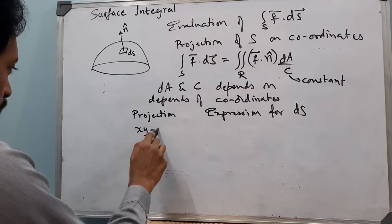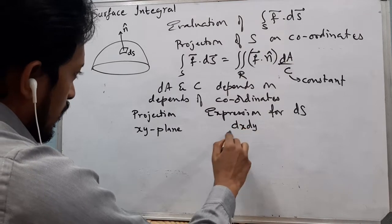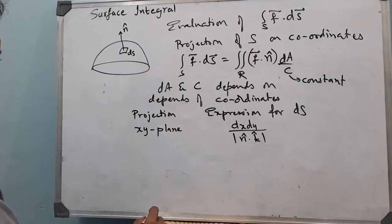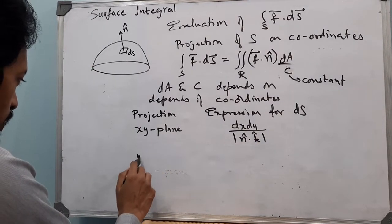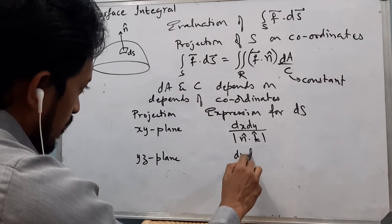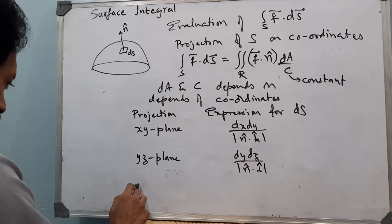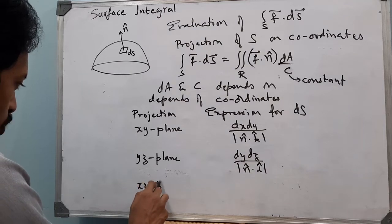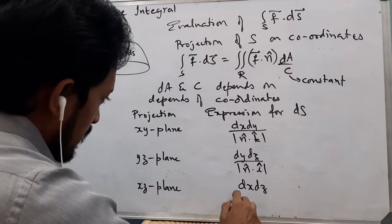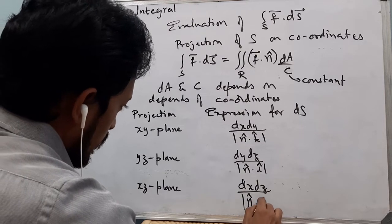If we project S onto the XY plane, we get dS = dx dy divided by the absolute value of n̂·k̂. If S is projected onto the YZ plane, we have dS = dy dz divided by |n̂·î|. And when S is projected onto the XZ plane, the expression would be dS = dx dz divided by the magnitude of n̂·ĵ.